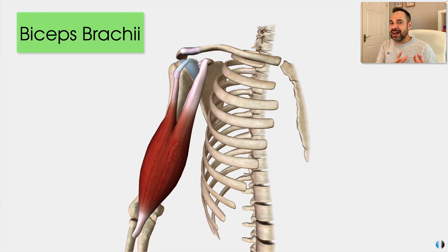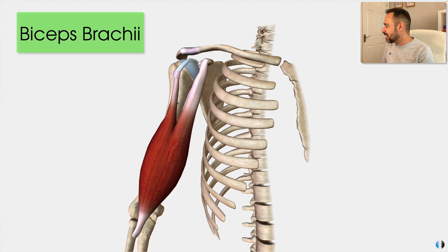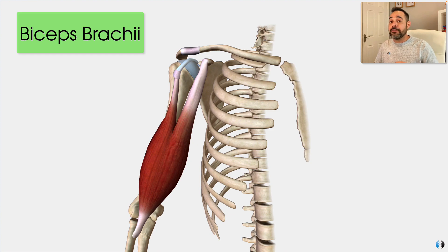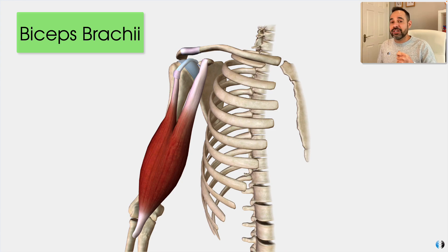Biceps brachii - biceps refers to the fact that it has two heads. As we can see here, we have a long head and a short head. Brachii is in reference to the fact that this is a structure of the arm. If we think about some of the other key structures like the brachial artery, which runs right through the arm, the brachialis muscle, and even the triceps, whose anatomical name is triceps brachii because it's in relation to the arm.